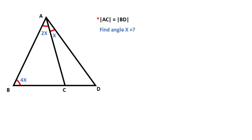In this video we have one triangle. Here is 4x, here is 2x, here is given x, and these two sides are given equal and x is x.